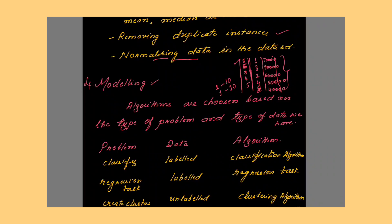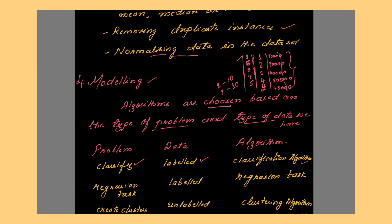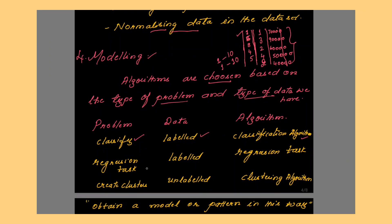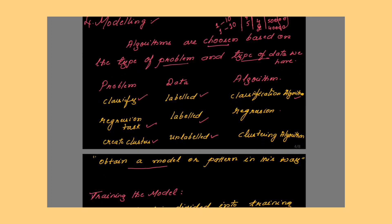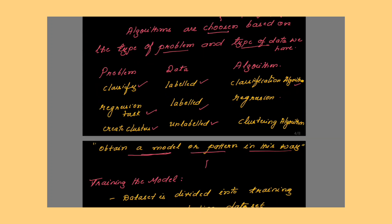Next step is modeling. Here in this stage, you will be using an algorithm in order to train the data. Algorithms are chosen based on the type of problem and type of data. If the problem is like classification, the data will be a labeled data and you will be using a classification algorithm. If your problem is a regression task, then you will be using labeled data and the regression algorithm. If your problem is to create clusters, unlabeled data will be given here and you can use the clustering algorithm. This way you can obtain a model or pattern. What is the difference? Pattern is applicable to some attributes only, so we say it is local. Whereas model is applicable to the entire dataset. It is global.